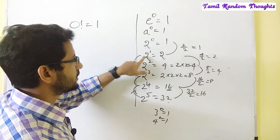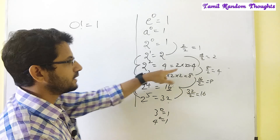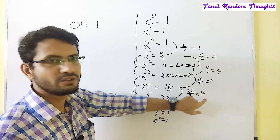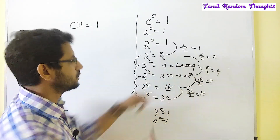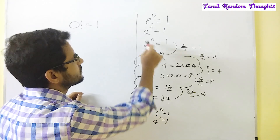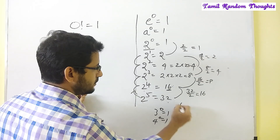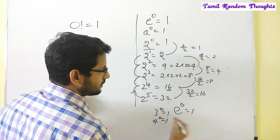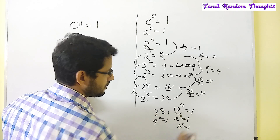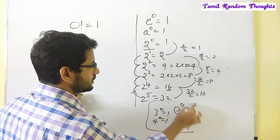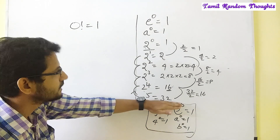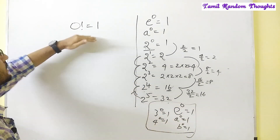3 squared is 9. So if you divide it, you divide by 3. So this proves that 2 power 0 is 1, b power 0 is 1, a power 0 is 1. So this is the proof — any number to the power 0 is 1.